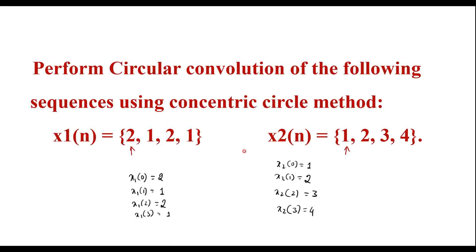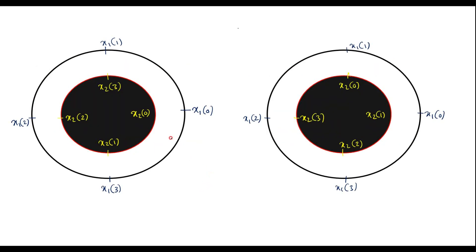In the concentric circle method, we draw two concentric circles — an outer circle and an inner circle. On the outer circle, we place the samples x1[n] written in the anticlockwise direction: x1[0], x1[1], x1[2], x1[3]. The inner circle is for x2[n], written in the clockwise direction: x2[0], x2[1], x2[2], x2[3]. This arrangement is for n=0.